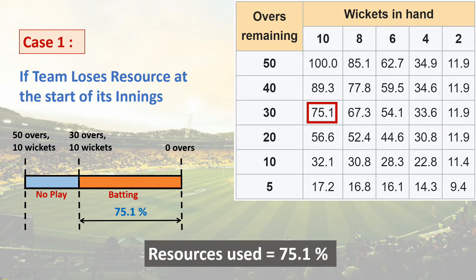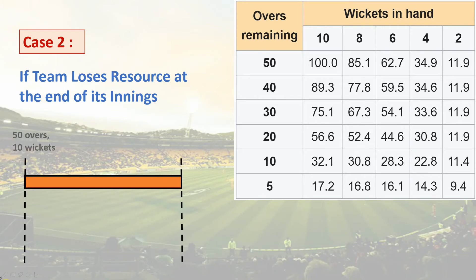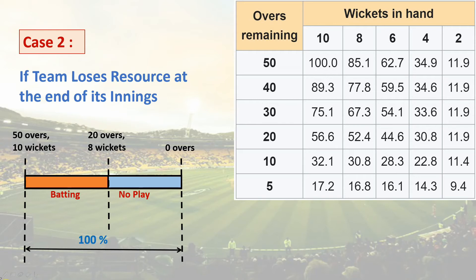In Case 2 — resource loss at the end of innings — if batting started normally but got interrupted when 20 overs and 8 wickets were remaining, with no further play, the total resource is 100%. The resources available after interruption correspond to 20 overs and 8 wickets, which is 52.4% from the table. So the resources used for batting become 100 − 52.4 = 47.6%, which are the final net resources used.